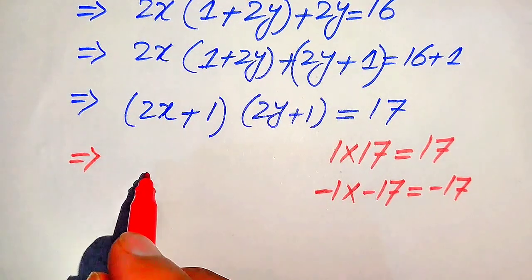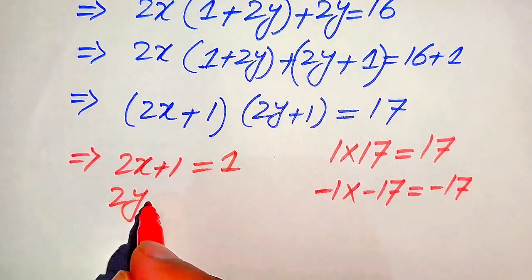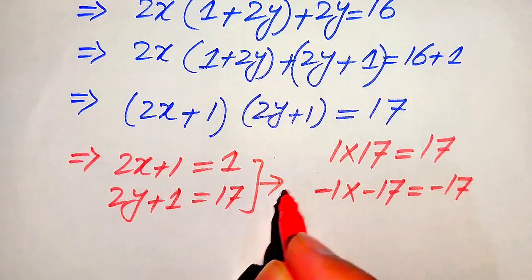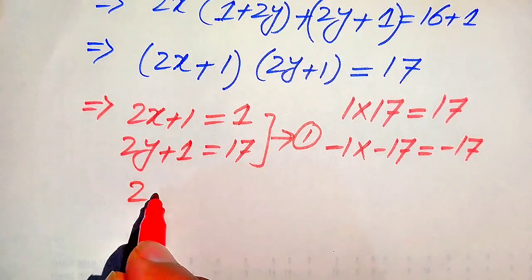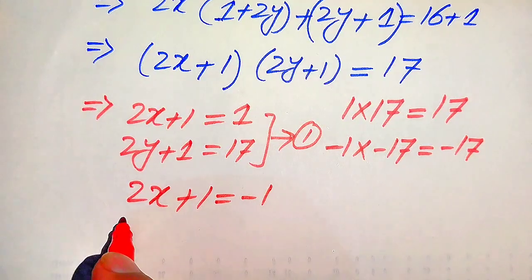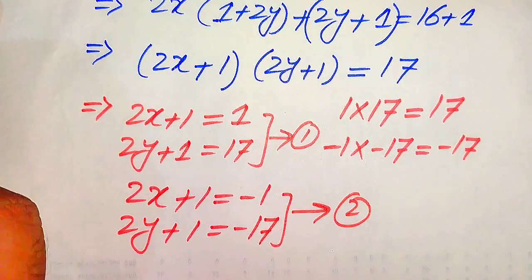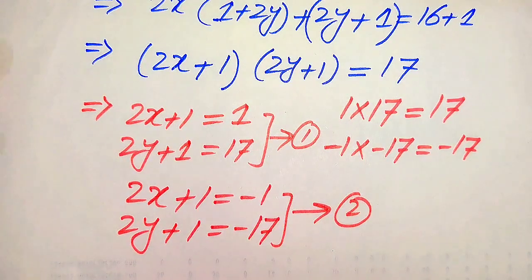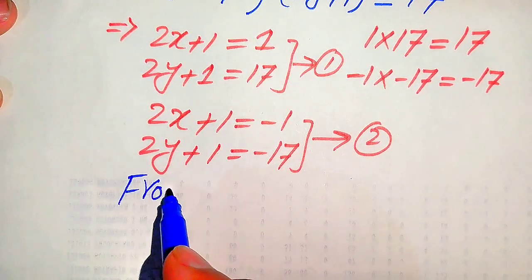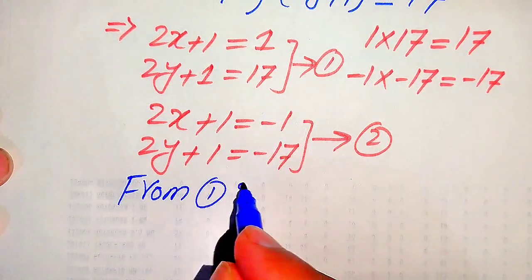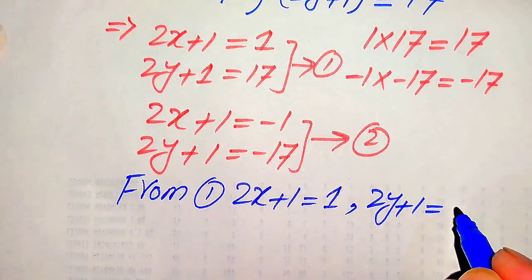Equating the factors to each pair of values: Case 1 gives us 2x + 1 = 1 and 2y + 1 = 17. Case 2 gives us 2x + 1 = −1 and 2y + 1 = −17. We will now find the values of x and y from each case.